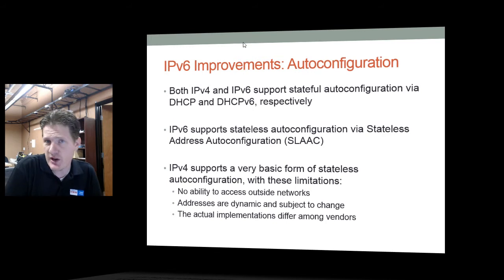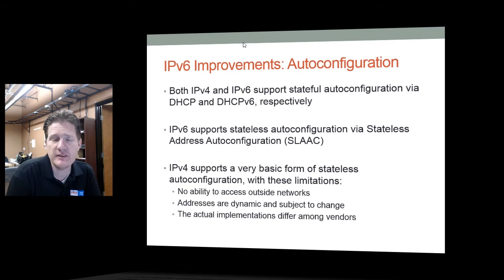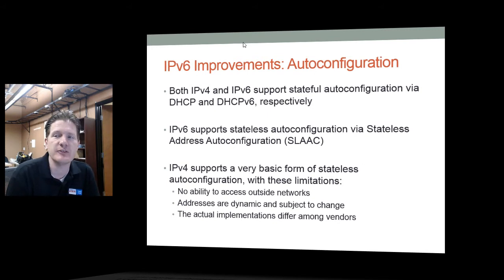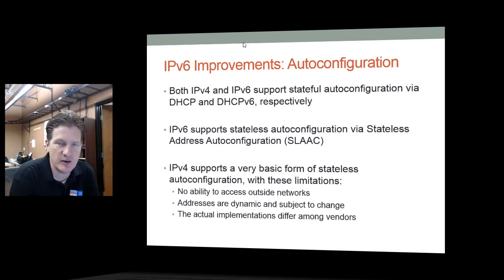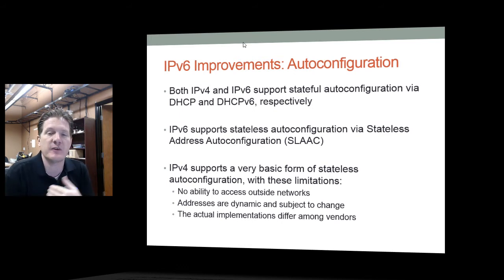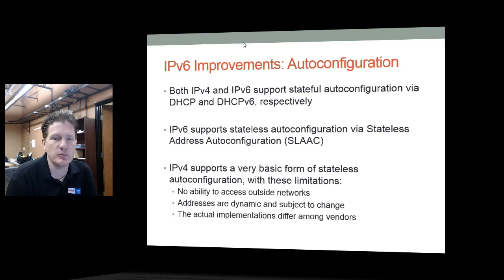IPv6 also improves auto-configuration dramatically. IPv4 had DHCP (Dynamic Host Configuration Protocol), and IPv6 also has that protocol, now called DHCPv6, which allows for stateful auto-configuration much like DHCP did in IPv4. IPv6 also supports what we call stateless address auto-configuration, or SLAAC (S-L-A-A-C), which provides auto-configuration to a node in a stateless manner.